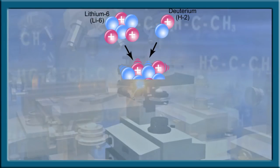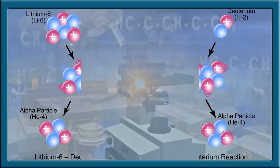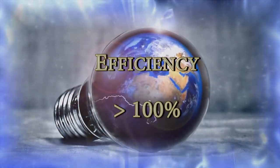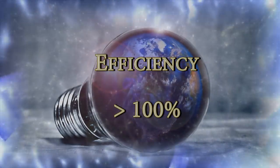International scientists believe that more energy out than the energy in is possible, and they have convinced major nations to finance the experiment. Energy efficiency greater than 100% is possible, and nuclear fusion is not the only means of achieving it.